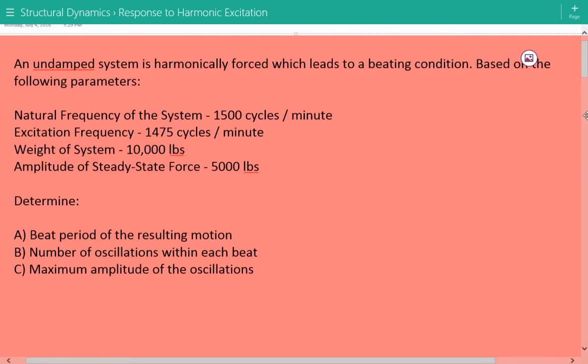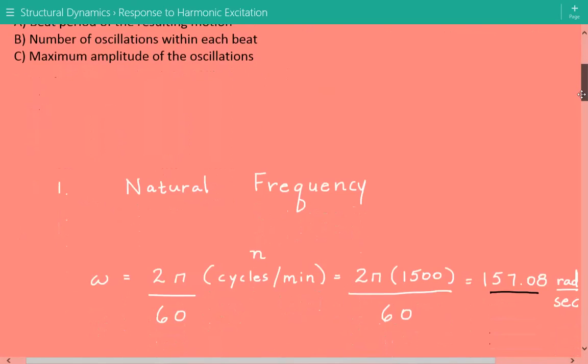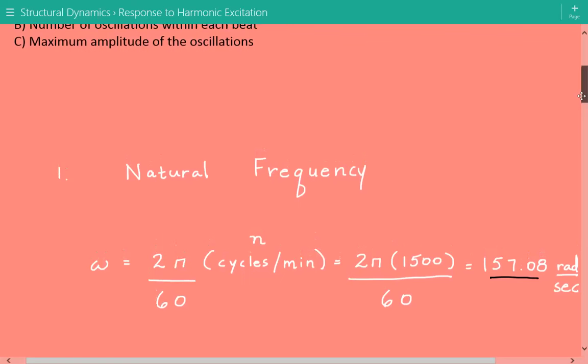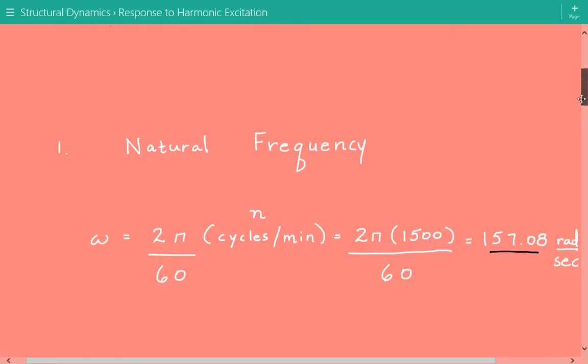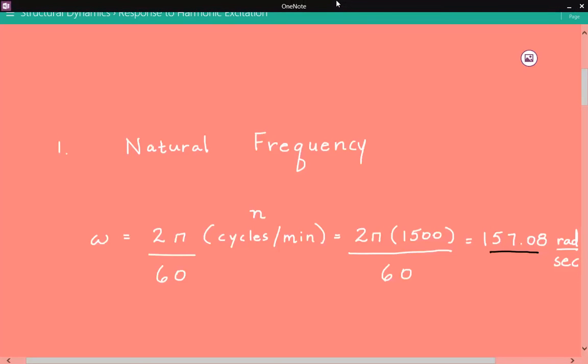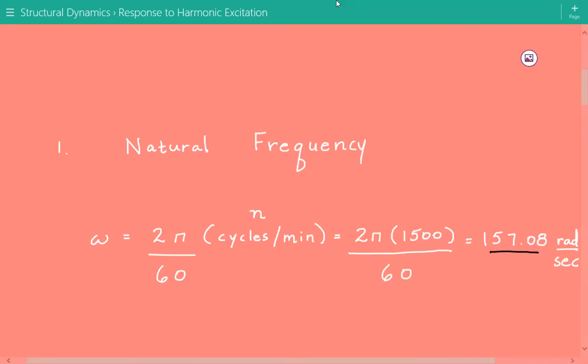And now coming back to our structural dynamics problem, the first thing we're going to do is convert the natural frequency of the system from cycles per minute to radians per second. So lowercase omega, this is what we call the circular natural frequency, is equal to 2π times the number of cycles per minute n divided by 60. We divide it by 60 because there are 60 seconds per minute.